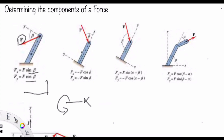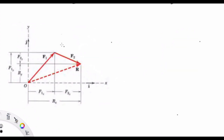In another typical example, we have the force F applied at a point of action where Fx equals minus F cosine beta and Fy equals minus F sine beta. In yet another case, where beta is given differently, Fx equals F sine of (phi minus beta) and Fy equals negative F cosine of (phi minus beta).